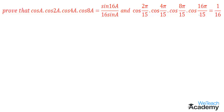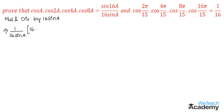In order to prove, let us consider the LHS side. In the LHS side, let us multiply and divide all the terms with 16 sin a. By multiplying and dividing we get 1/(16 sin a) · 16 sin a · cos a · cos 2a · cos 4a · cos 8a.